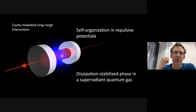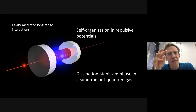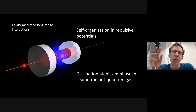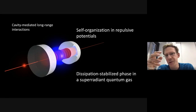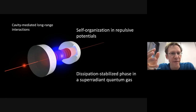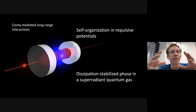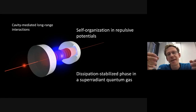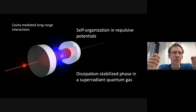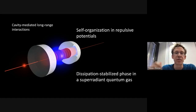This brings me to the outline of my talk. First, I will introduce how we create cavity-mediated long-range interactions, which are important for both parts. The first part is about self-organization of atoms in repulsive potentials — structure formation in a repulsive potential. The second part is about a dissipation-stabilized phase in a superradiant quantum gas, showing how dissipation influences the system.